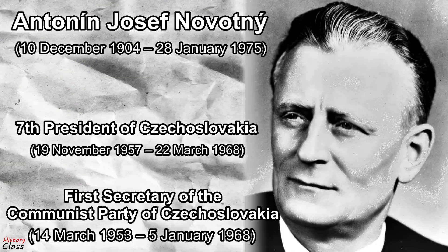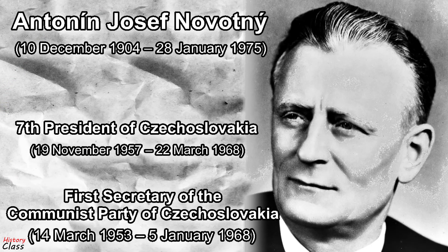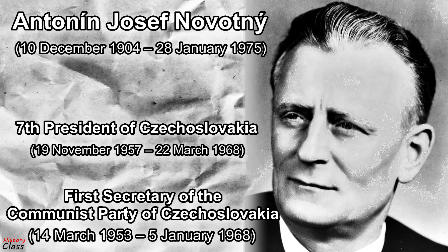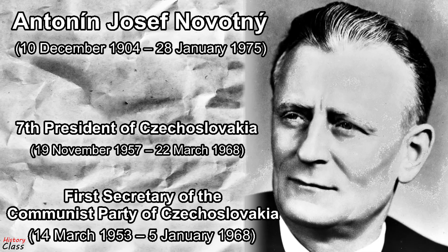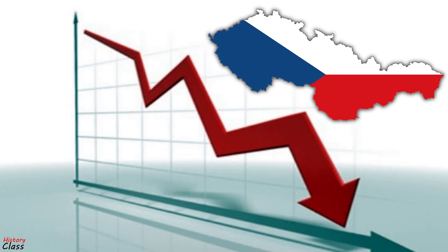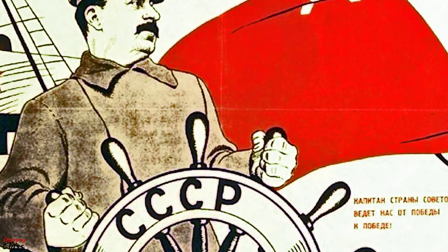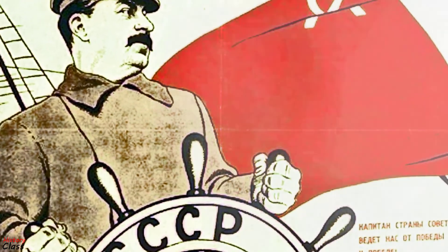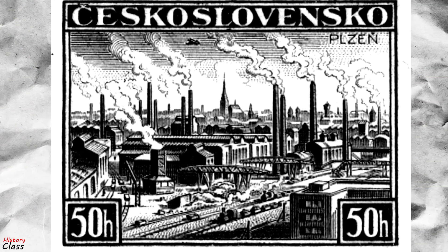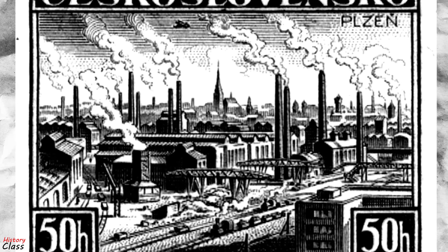In Czechoslovakia, the process of de-Stalinization had begun under Antonin Novotny in the late 1950s and early 1960s, but had progressed more slowly than in most other states of the Eastern Bloc. In the early 1960s, Czechoslovakia underwent an economic downturn. The Soviet model of industrialization applied poorly to Czechoslovakia, which was already quite industrialized before World War II, and the Soviet model mainly took into account less developed economies.